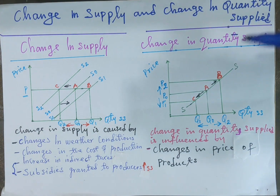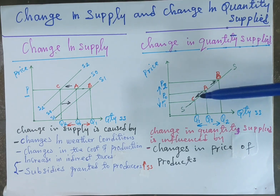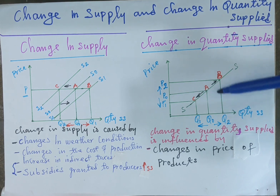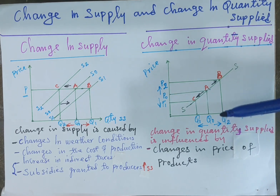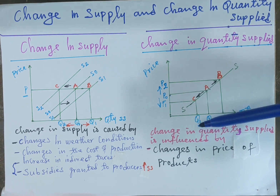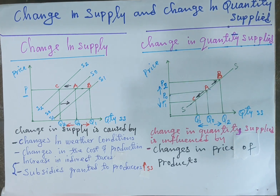Let's move to change in quantity supply. Change in quantity supply is the movement along the same supply curve, which is caused by changes in price. As a result of an increase in price, this increases the quantity supplied from Q0 to Q2, and this movement is shown from point A to point B. When price falls from P0 to P1, the quantity supplied will fall from Q0 to Q1. This obeys the law of supply, which states that supply increases as price increases and falls as price falls. This movement is shown on the graph from point A to point C.